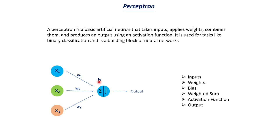Bias will always be a single value. Weights are equal to the number of input features — if you have 10 input features, you have 10 weights — but you always have one bias value. Now re-reading the definition: a perceptron is a basic artificial neuron that takes inputs (X1, X2, X3), applies weights (W1, W2, W3), combines them — which is what happens in the summation — and produces an output using an activation function. It is used for tasks like binary classification and is a building block of neural networks.